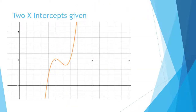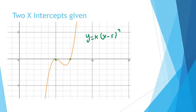Now another cubic case: when two x-intercepts are given. You can tell it's cubic from the shape. One of the x-intercepts is repeated — the repeated one is where the curve forms a vertex, like a parabola's turning point. So we write y equals k times (x minus 5) squared times (x minus 7).